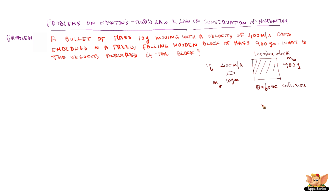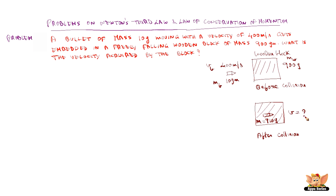Once the bullet collides, it is embedded inside the wooden block. So the total mass of the wooden block becomes 910 grams — 900 grams of the wooden block and 10 grams of the bullet. Now we need to find out the velocity with which the block moves.